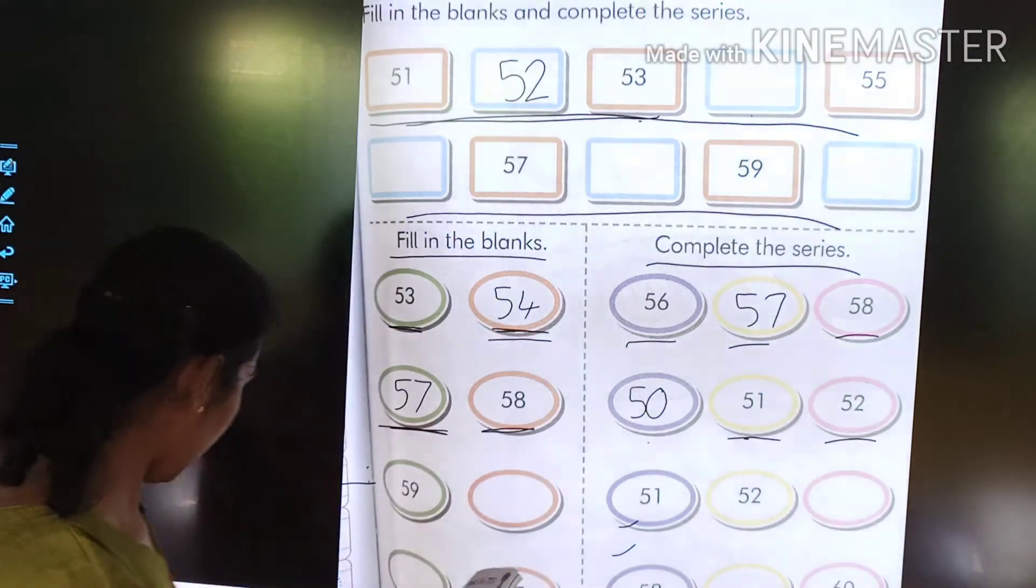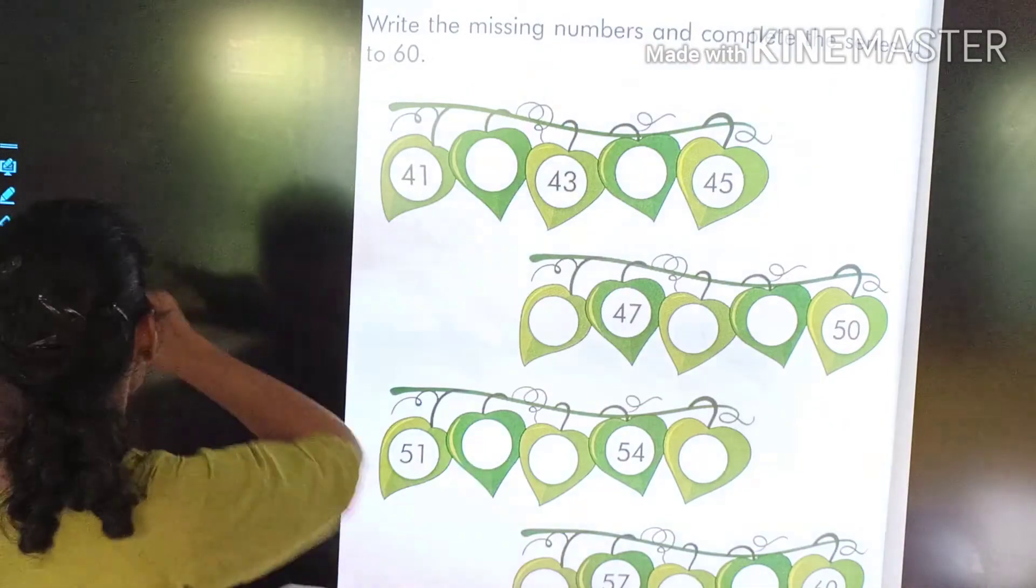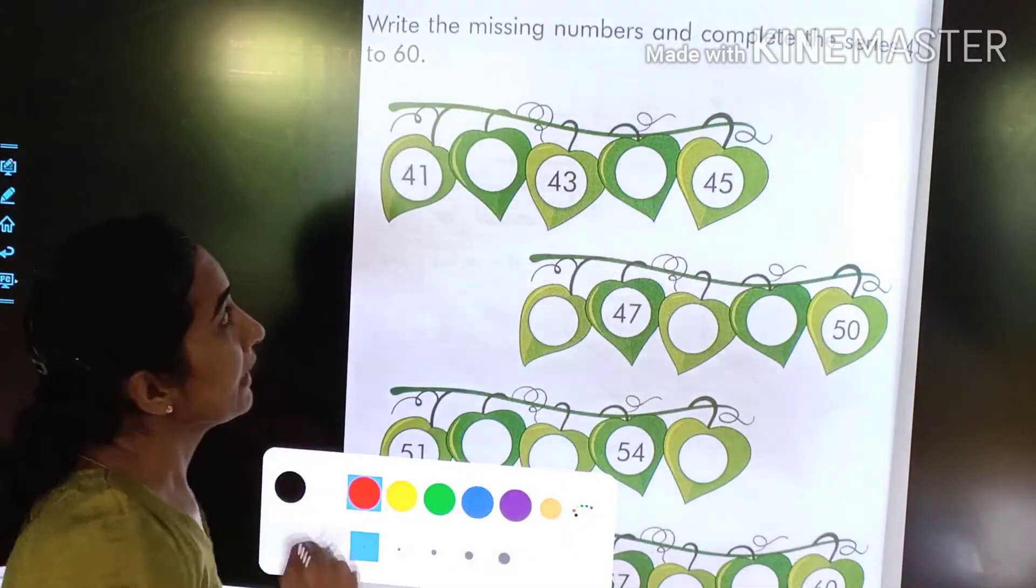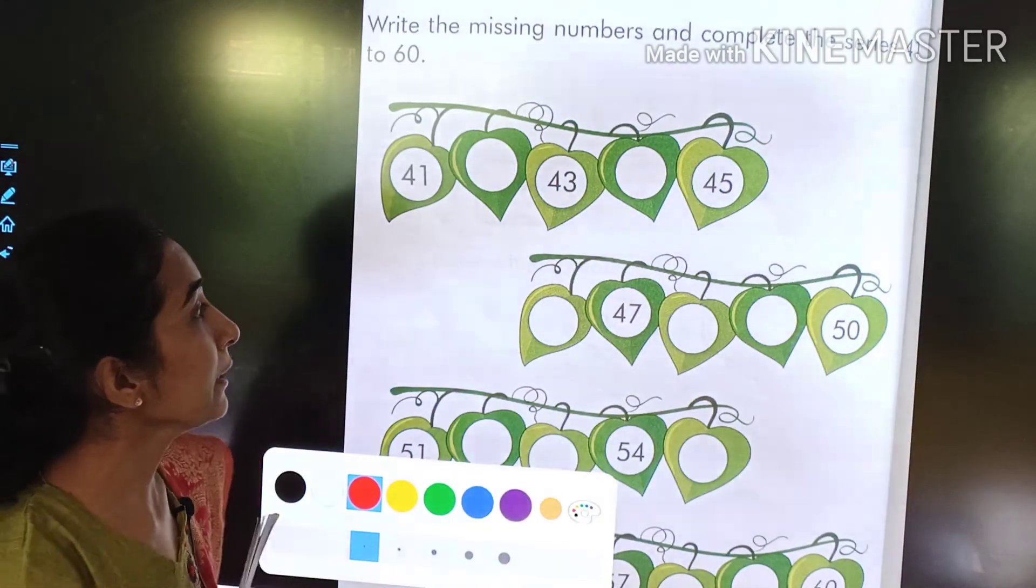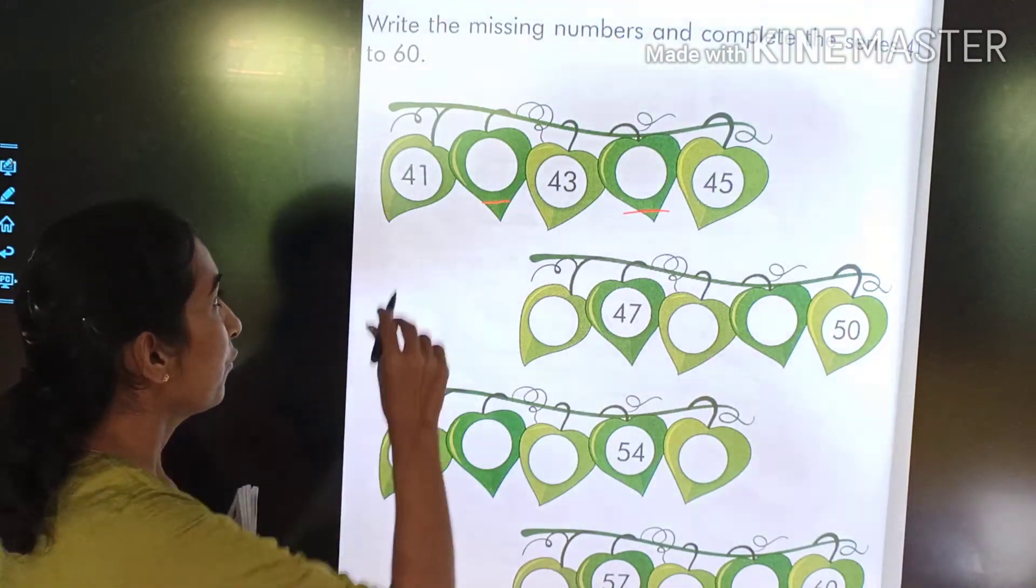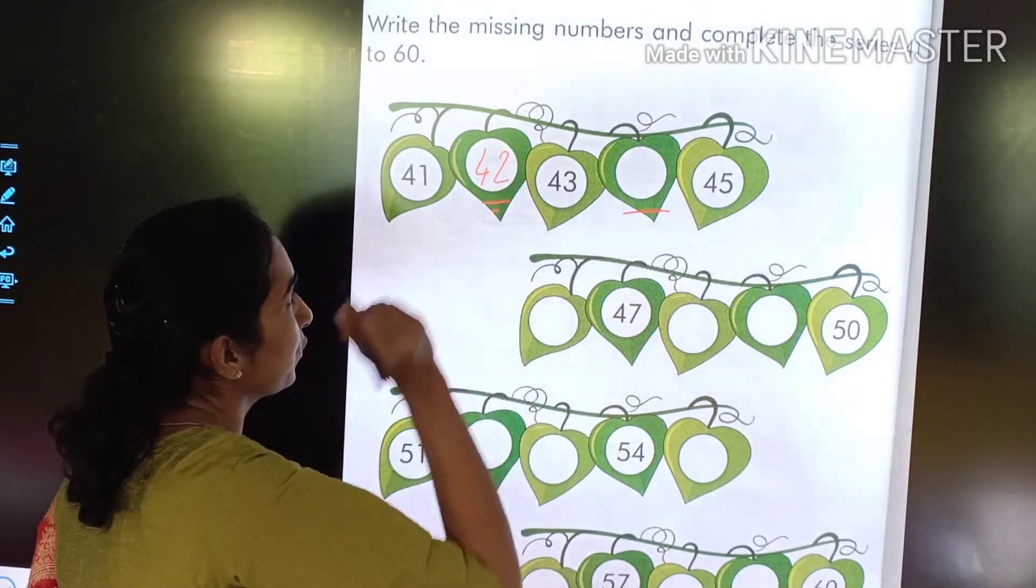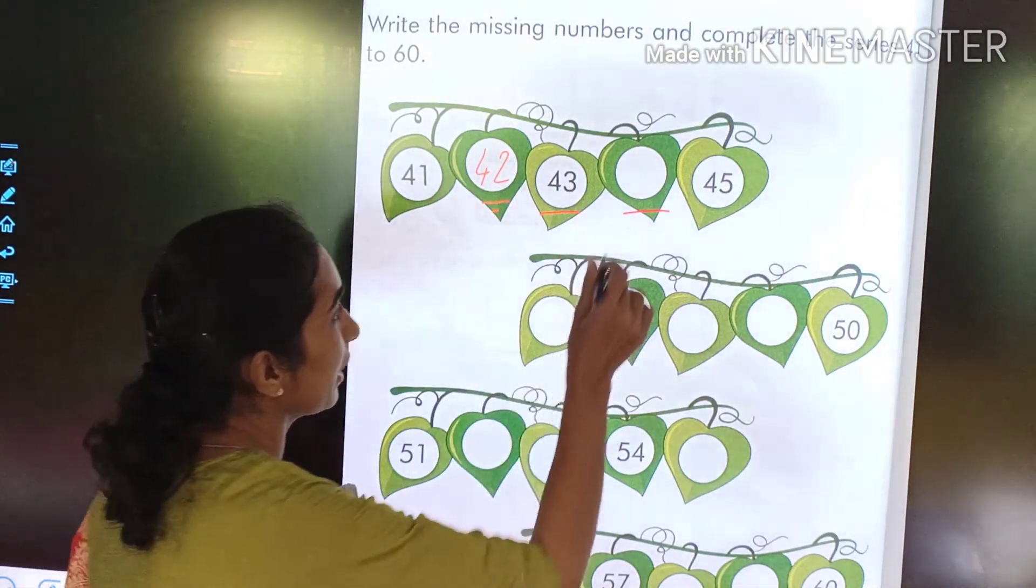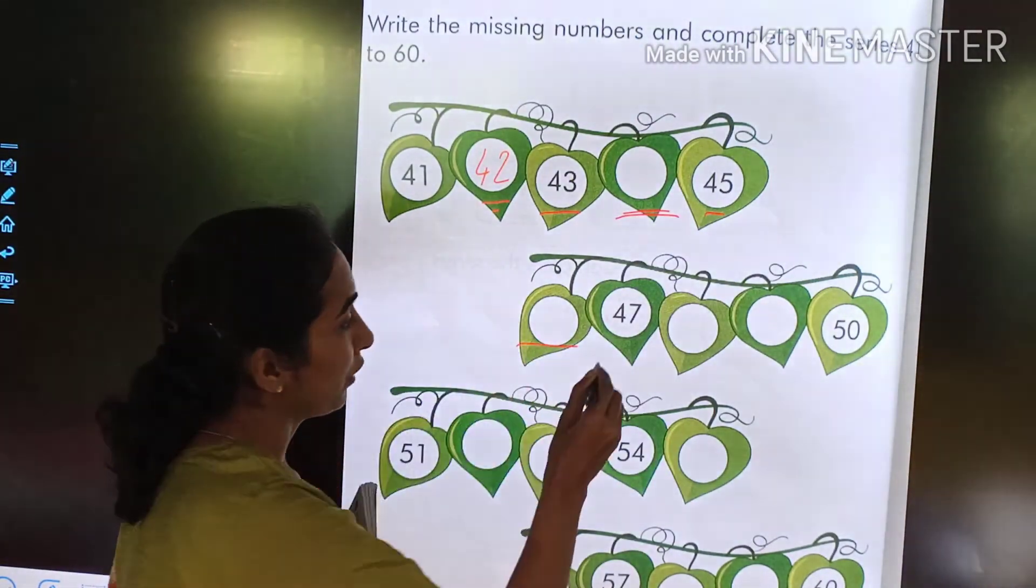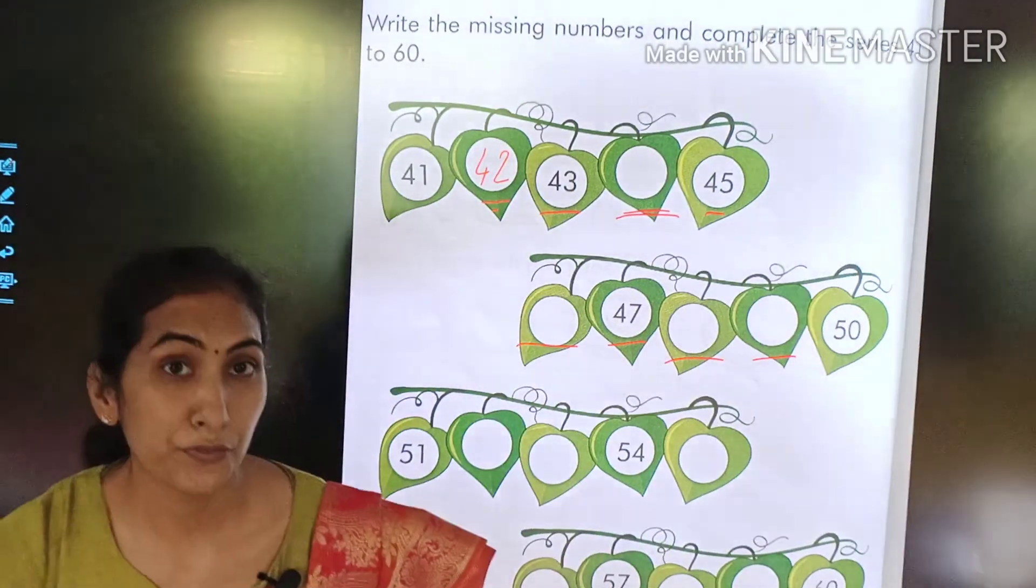Go to page number 94. This is page number 94. So what you can see here? Write the missing numbers. Missing numbers means, see, there is a gap. You have to fill that. What comes after 41? 42. Then it will come 43. What comes after that? After that is 44. What comes after? 47. So these are the gaps that you have to fill.